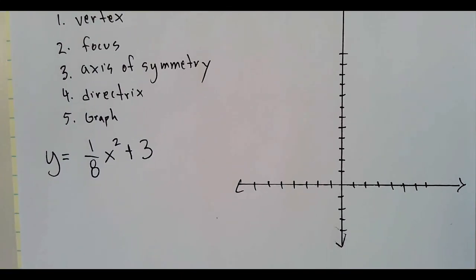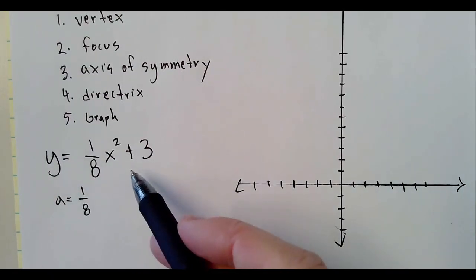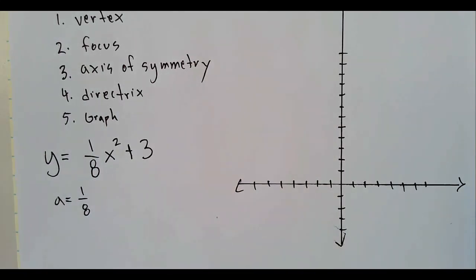We need to identify a, h, and k, and we need to identify the directrix and all that. We're going to graph it right over here. So what is a? Well, a we can see right here is one-eighth.